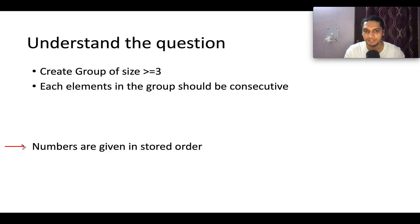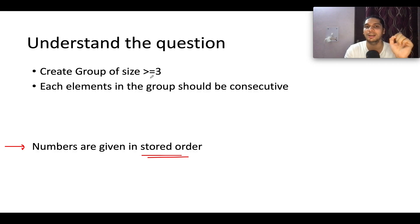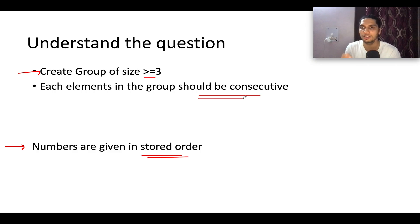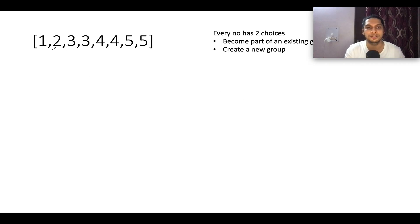The question says you are given numbers in sorted order — remember all numbers are in sorted order. We need to create groups of sizes that have length equal to three or greater than three. Each element in the group should be consecutive in nature; there should not be a case where elements in a subset are non-consecutive. Keeping these constraints in mind, let's understand it with one of the examples specified in the question.